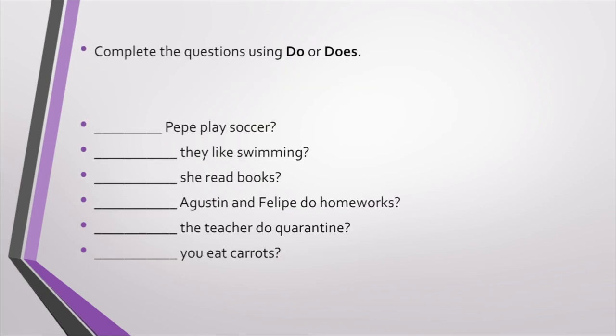Y al final del video les voy a explicar cómo va a ser la revisión. Complete the questions using do or does. Van a completar las preguntas usando do or does como lo vimos recién. This is very simple. You have to identify the subject and you can replace it by one personal pronoun. For example, Pepe you can replace Pepe by he. Remember Pepe sería él, por lo tanto es he. Y sabemos que he, she, it va con does. I, you, we, they va con do. Remember.